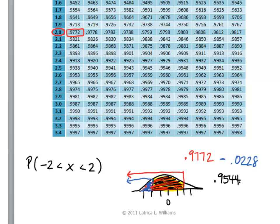Thus, the probability that the mean gestation length is between 262 and 270 days for this sample size of 64 pregnancies is .9544.